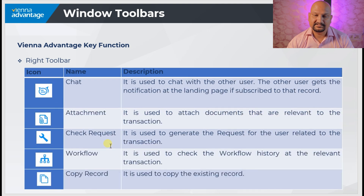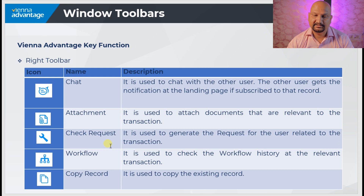The next is chat, used to chat with other users in the organization. The other user gets a notification on the landing page if subscribed to that particular record. Then we have attachment, used to attach documents relevant to transactions. Then check request, used to generate a request for the user related to the transaction. Then workflow, used to check the workflow history at the transaction level. Then copy record, used to copy the existing record.